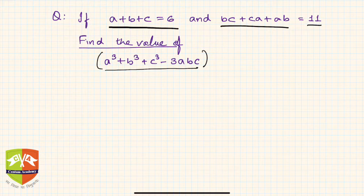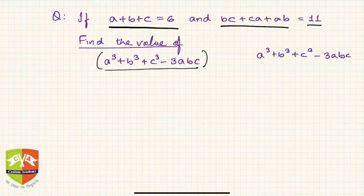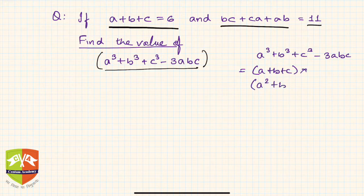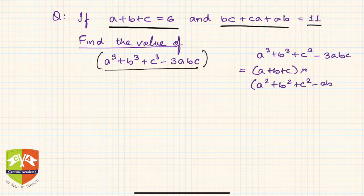That special identity is: a cube plus b cube plus c cube minus 3abc is equal to a plus b plus c, multiplied with a square plus b square plus c square, minus ab minus bc minus ca.